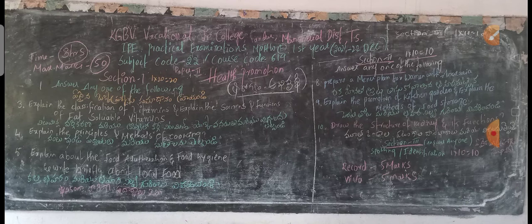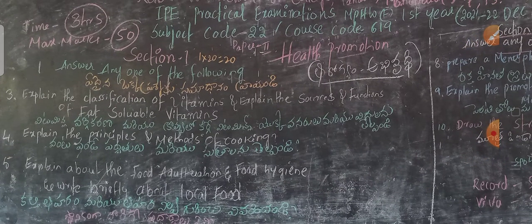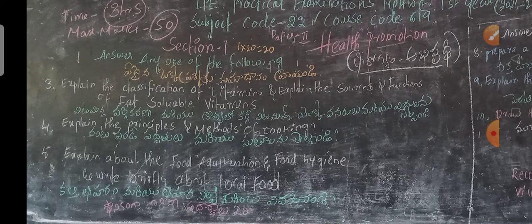This is for the MPHW first year students in the subject of health promotion. The time is three hours, maximum marks 50. There are three sections: section one, section two, and section three. Due to corona we have a choice this time; otherwise there is no choice in final practicals.